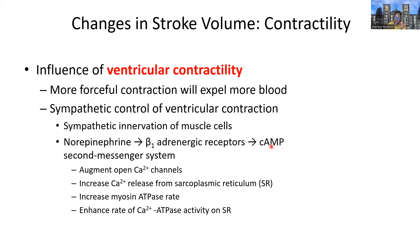Similar signaling events occur, but the results on ventricular contractile cells are four distinct effects. We're no longer looking at SA nodal and AV nodal cells — we're looking at ventricular contractile cells. When we engage the sympathetic system on these cells, the first effect is to keep the calcium channels open for longer. This gives us more powerful and sustained contractions because we now have more calcium to drive those contractions.